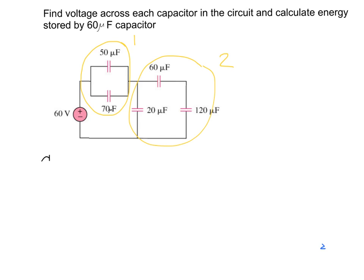For group one, the equivalent capacitance C_eq1 will be calculated as follows: we have two capacitors, 50 and 70 microfarads, connected in parallel. Since they're in parallel, we add them: 50 plus 70 gives us 120 microfarads.